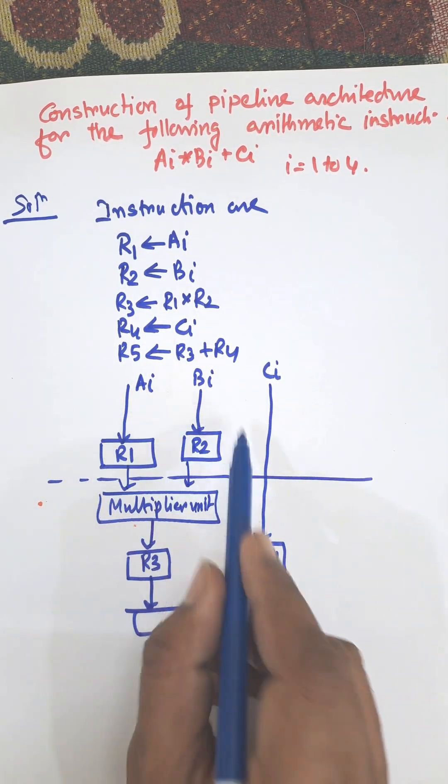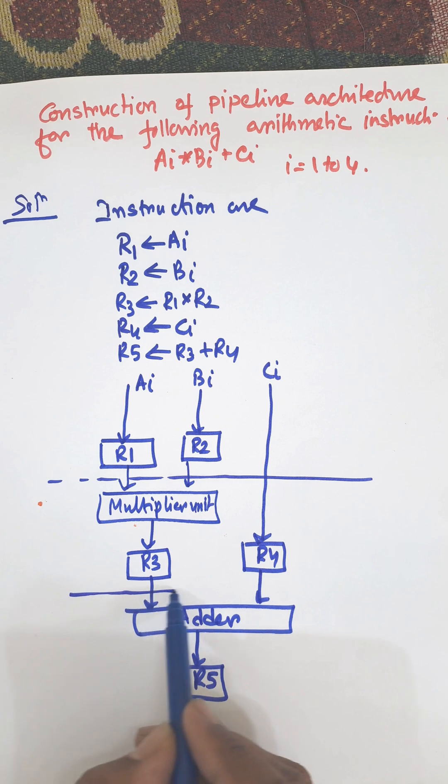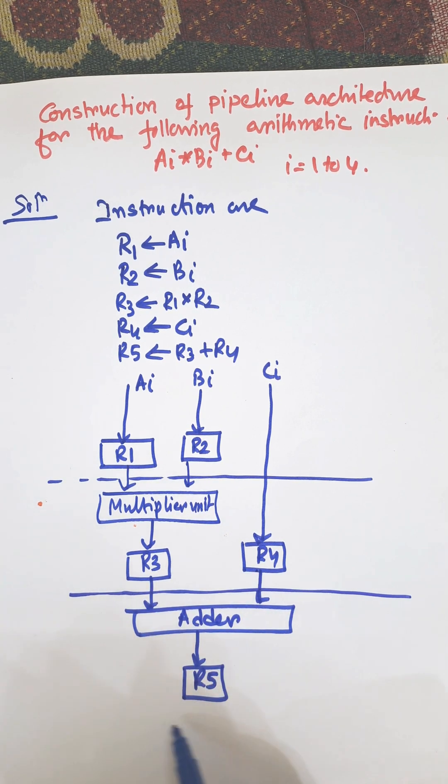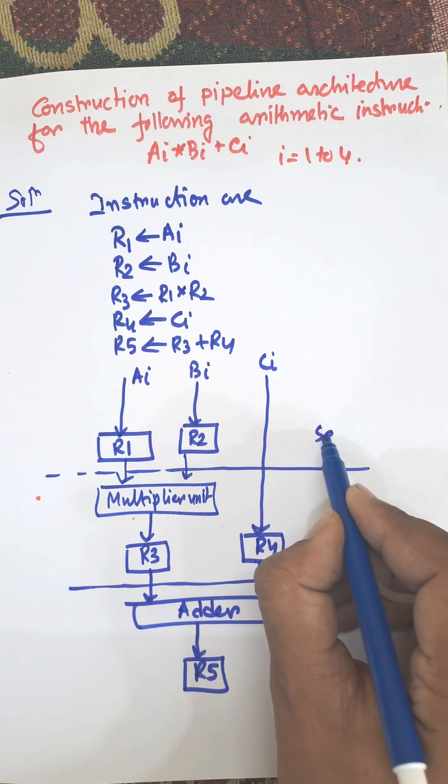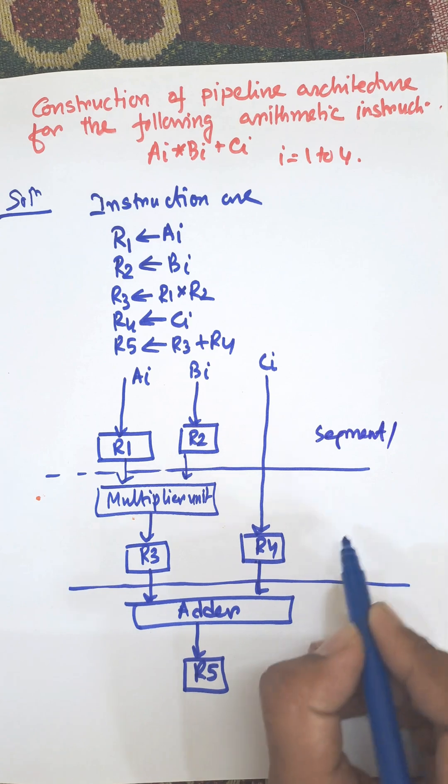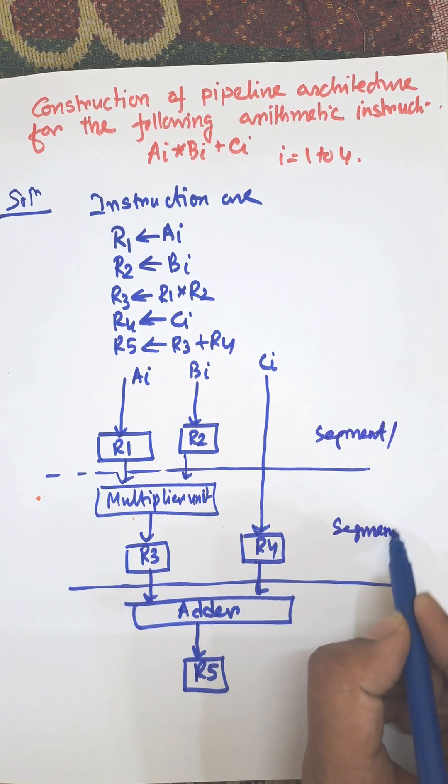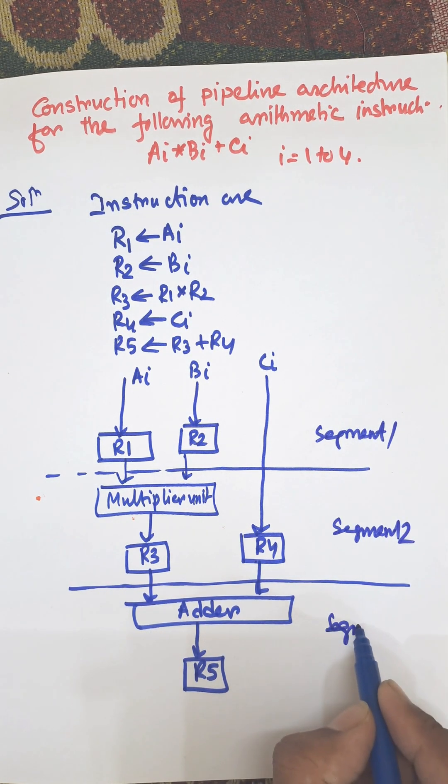The first segment is up to the registers r1 and r2. Then the next segment is up to r3 or r4. And finally r5. This is segment one, this is segment two, and this one is segment three.